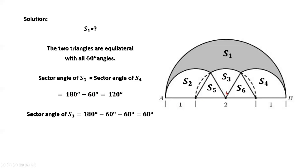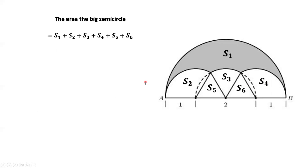The second angle of S3. Now we are ready to calculate the area of S2, S3, S4. Let's calculate the area of this big semicircle first, which is the sum of six pieces: one-half times π times r squared. Now r is 2, so 2 squared — simplify — we have 2π. 2π is the area for this bigger semicircle.